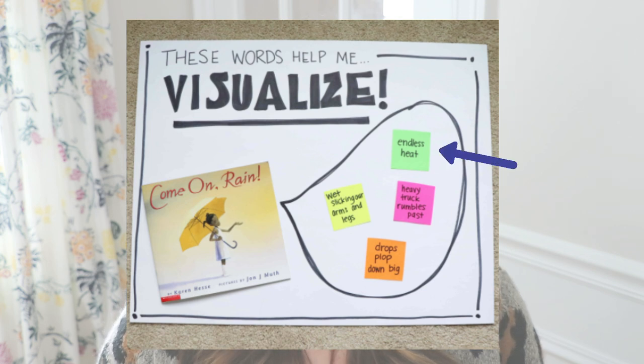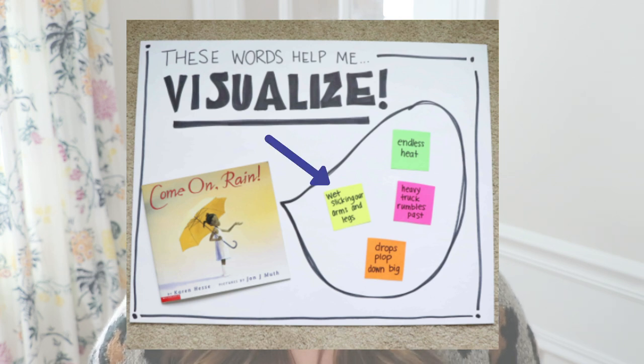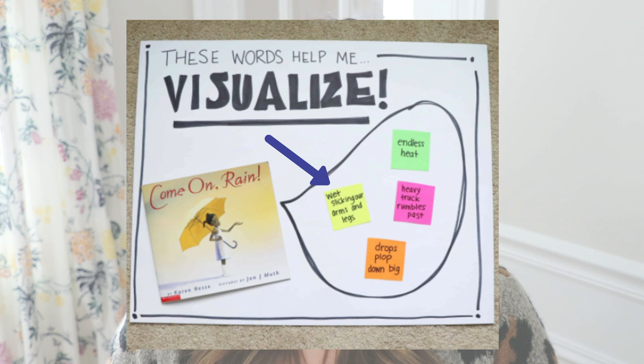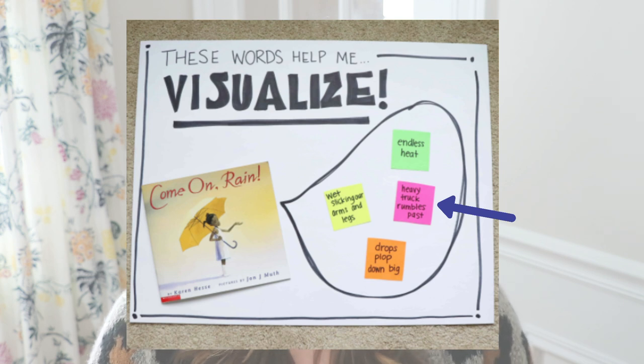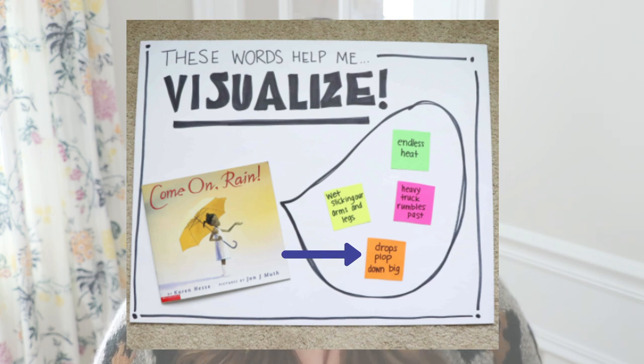For example, 'endless heat' — you can tell that it is hot. 'Wet slicking our arms and legs' — in this story about rain you can feel the wetness on your arms and on your legs. 'Heavy trucks rumble past' — you can hear the sounds of the trucks rumbling. And 'drops plop down big' — the sensory details the author chooses really help us create a beautiful visualization of what is going on in the story. I use sticky notes on the anchor chart so I can point them out and put them up, and throughout the week I can replace them with a new mentor text and point out those sensory details for the new book.